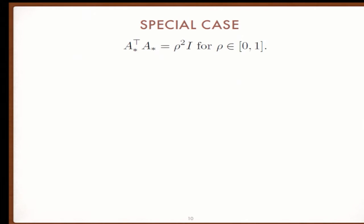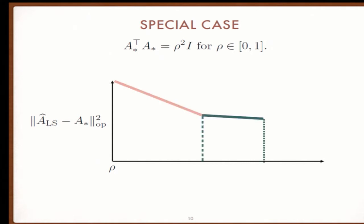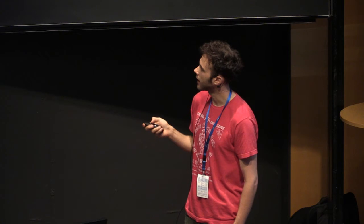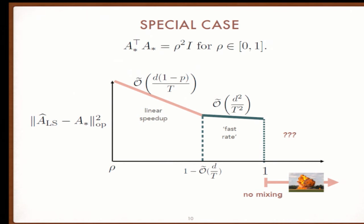One nice special case illustrates the inverse relationship between mixing time and learning rates. We consider matrices that are scaled orthogonal matrices, with parameter ρ in (0,1). I'll give an artist representation of the error at time T as a function of spectral radius. We find two regimes: one with linear speed-up in spectral radius, then it flattens off to a fast rate. In the linear speed-up, as ρ approaches one it speeds up, and in the fast rate regime we get quadratic improvement. This holds even up to one, for systems without mixing.